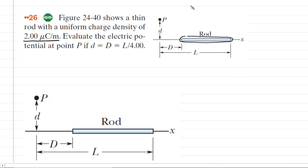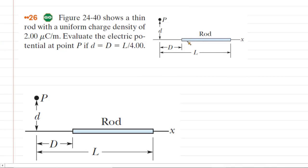But in this case, we don't have a handful of just a few point charges. We have a continuous charge distribution. There's basically an uncountable number of charges along this rod. So we have to end up using calculus to figure this out.